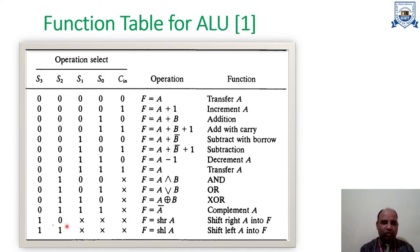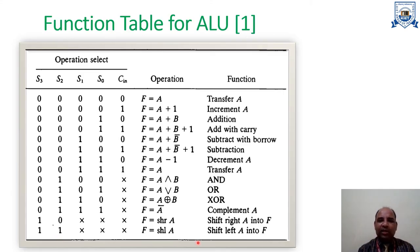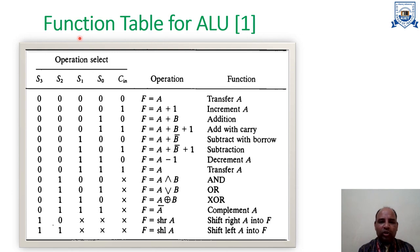When S3=1 and S2=0, or S3=1 and S2=1, these two situations represent shift operations. For shift operations, only S3 and S2 play a role; S1, S0, and c_in are marked as don't care. When S3=1 and S2=0, it is a shift right operation. When S3=1 and S2=1, it is a shift left operation (SHLA), which we studied in the previous lecture.